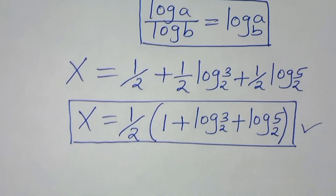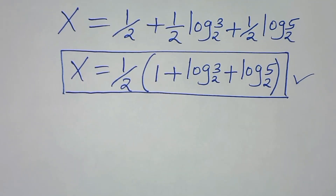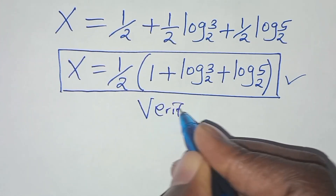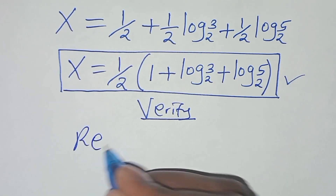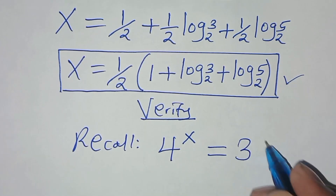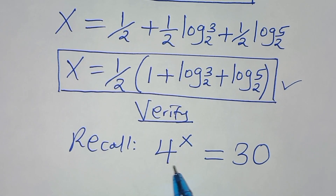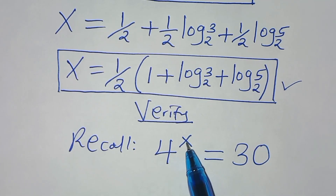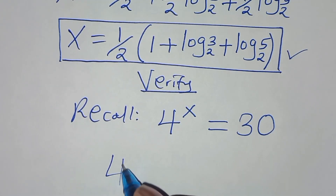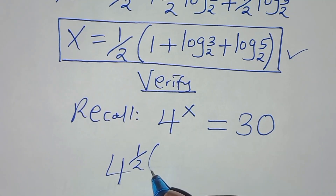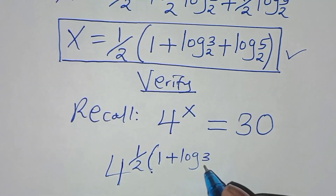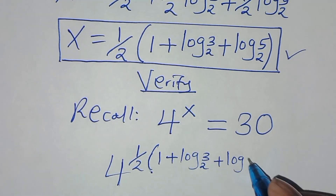Let's verify that this value of x actually satisfies the equation. We have 4 to the power x equals 30. Substituting the value of x, we get 4 to the power of one-half times (1 plus log₂3 plus log₂5), and this should give us 30. We can express 4 as 2², so this becomes 2² to the power of one-half times (1 plus log₂3 plus log₂5).